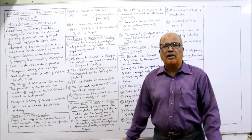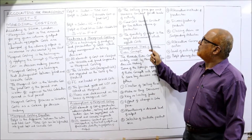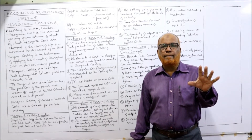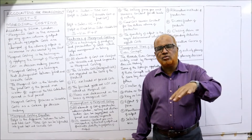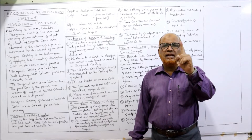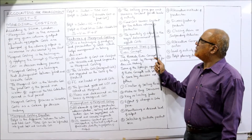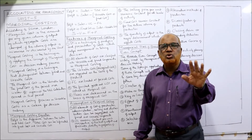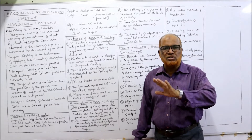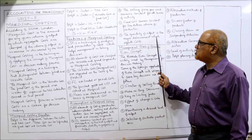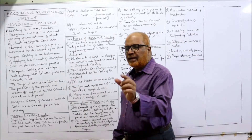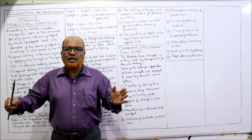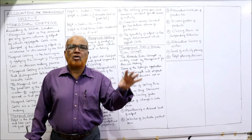The third assumption: selling price per unit remains constant for all levels of activity — whether we produce and sell 1,000 units or 100 units, the selling price per unit stays the same. The fourth assumption: fixed cost remains constant for the entire volume of production — it does not change in the short run. The fifth assumption: the quantity of output is the major determinant affecting cost — when you change quantity, it has a direct impact on cost.